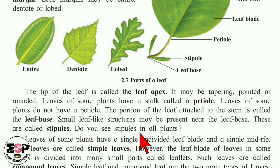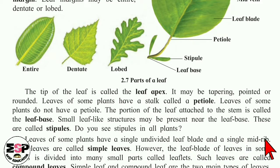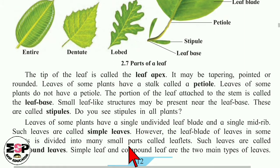Do you see stipules in all the plants? No — stipules are not present in all plants. Leaves of some plants have a single undivided leaf blade and a single midrib. Such leaves are called simple leaves.